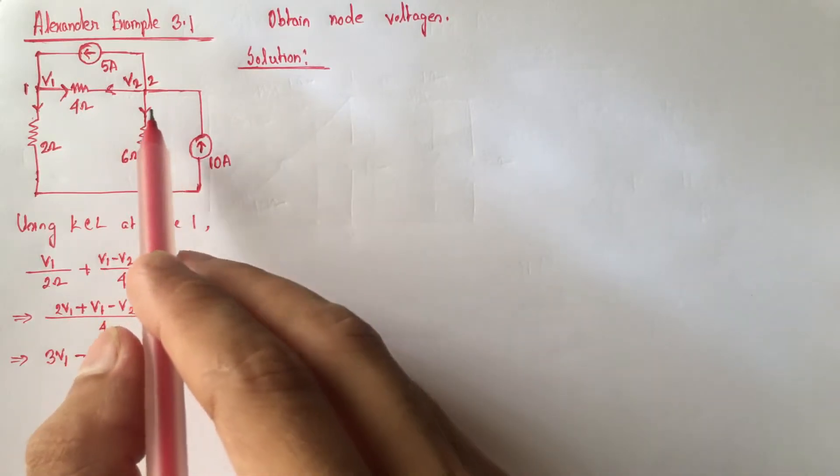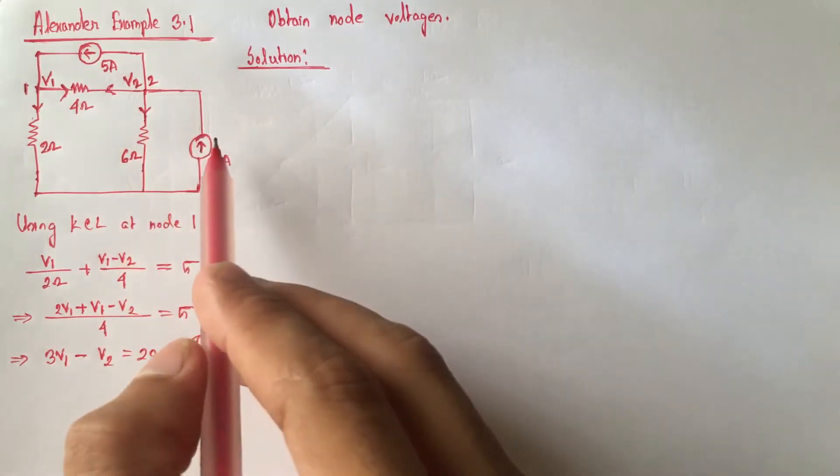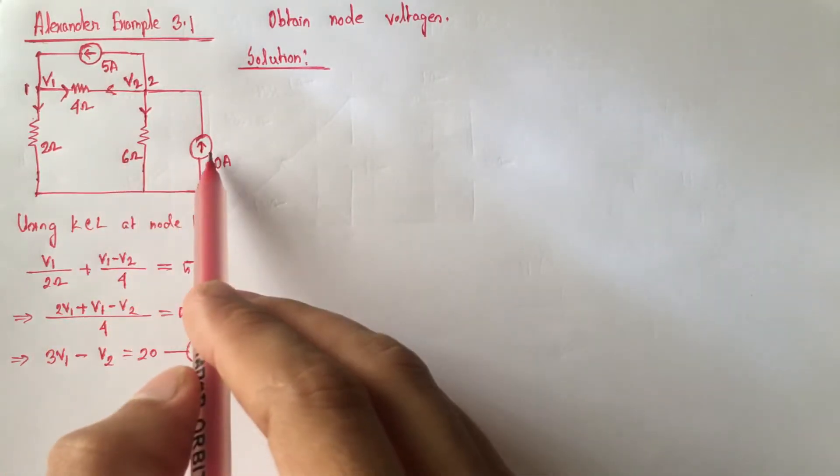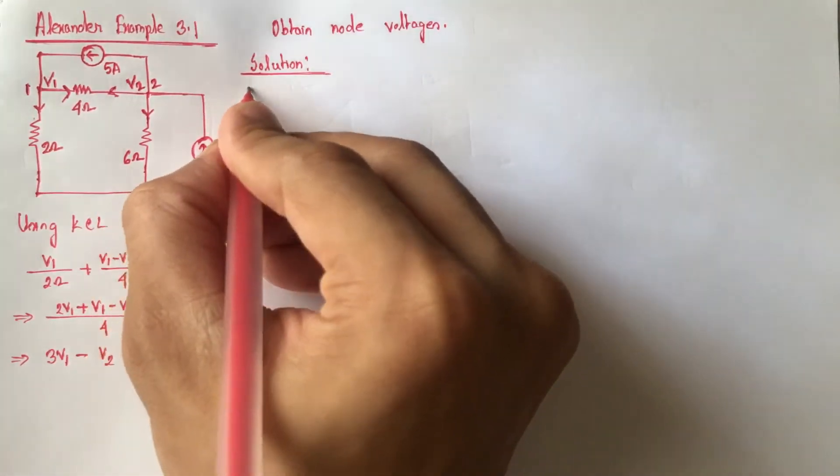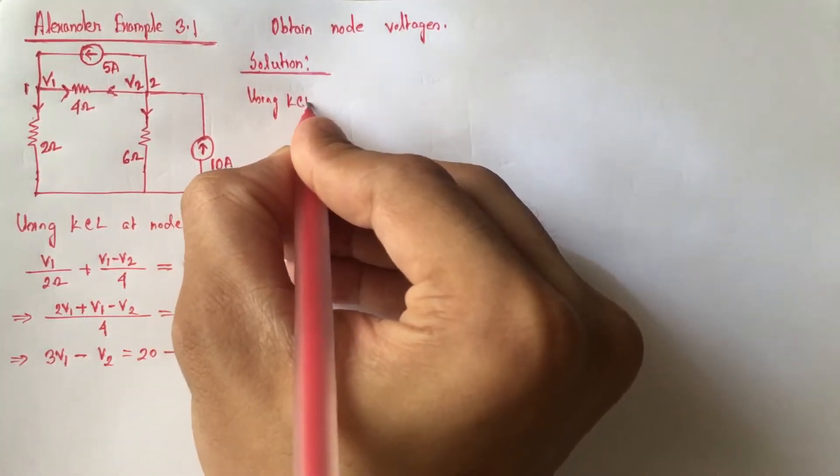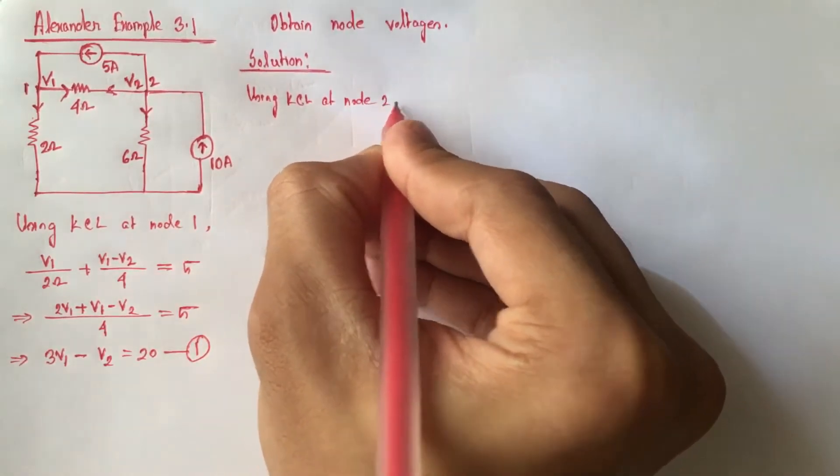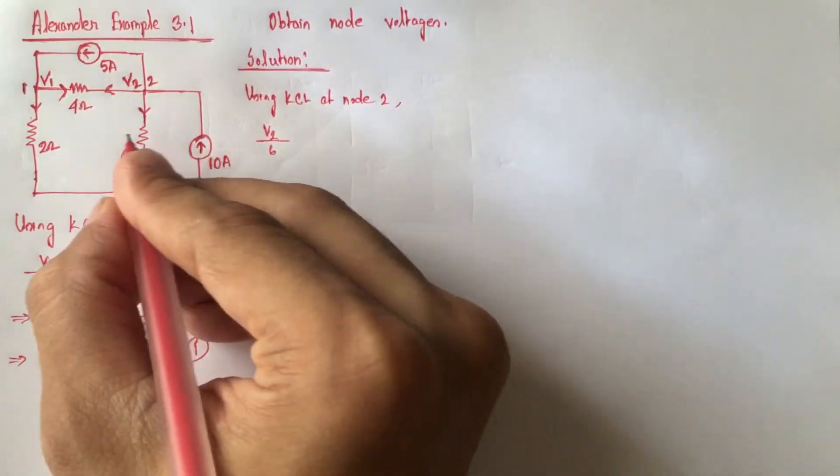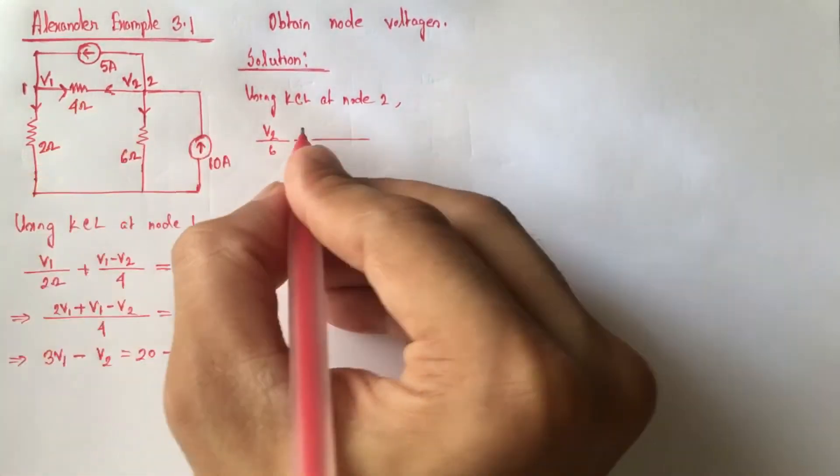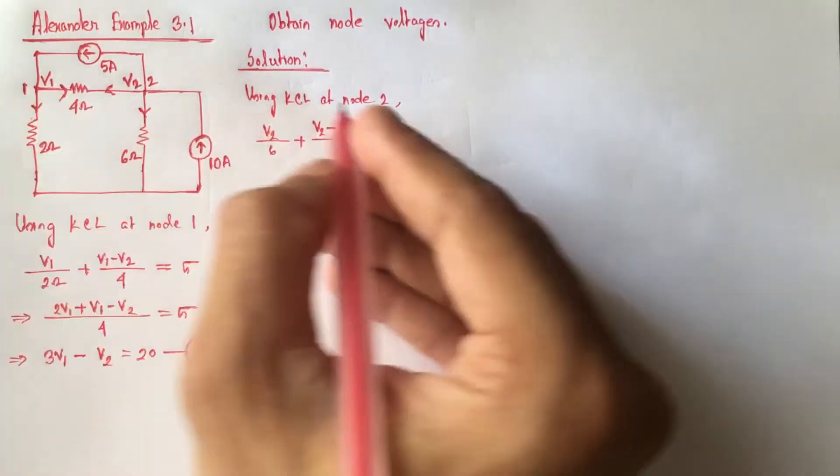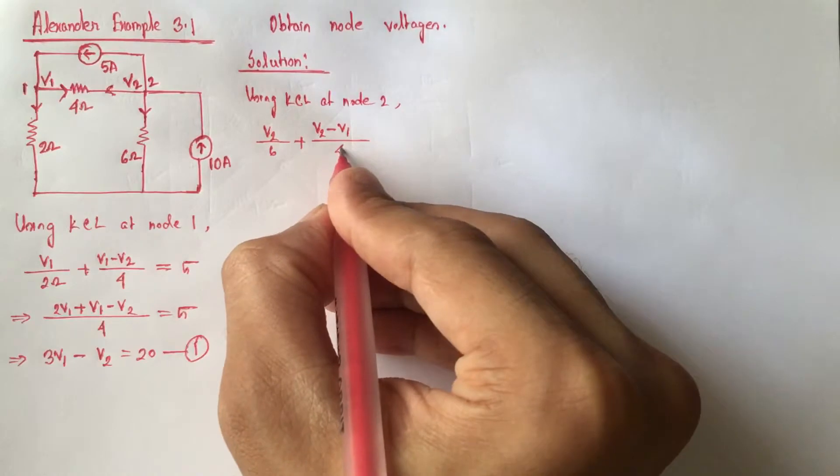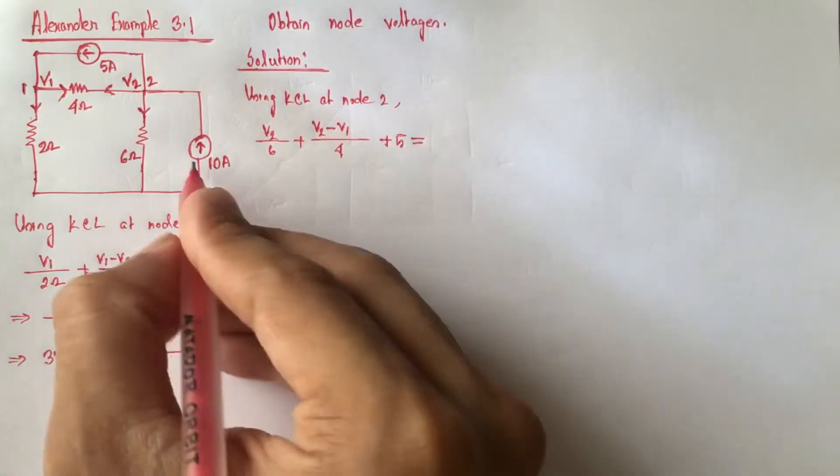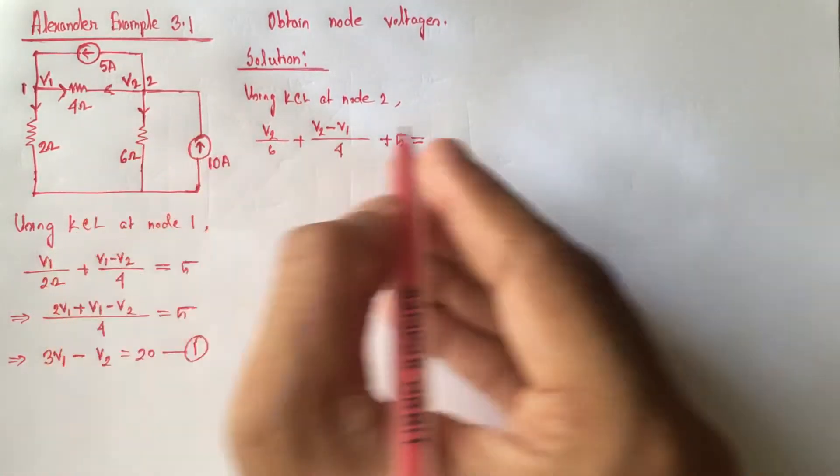We will get the combination of 5A outgoing current and this path current will be equal to 10A. So using KCL at node 2, this current V2 by 6 which is outgoing plus this current which is V2 minus V1 divided by 4 plus this 5A outgoing current is equal to 10A.